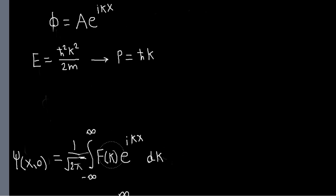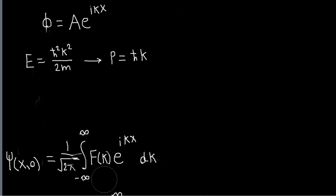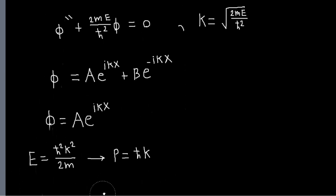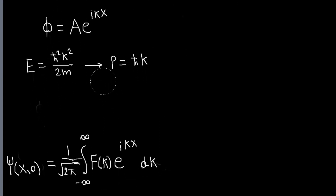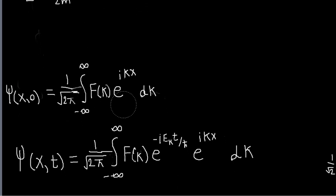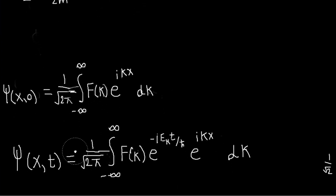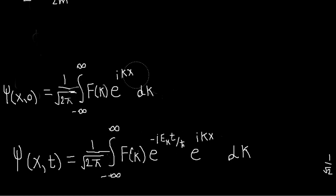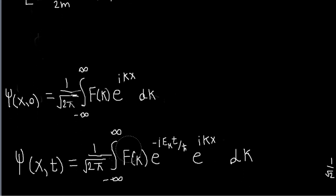Instead of having just expansion coefficients, we need a function of k, because we have an expansion coefficient for every continuous value of k. But since the eigenstates of the Hamiltonian are also eigenstates of the momentum operator, once we've done this we can trivially solve the Schrödinger equation by applying the time evolution operator. Every term in the integral just gets a factor of e^(−iE_k t/ℏ), where E_k is ℏ²k²/2m.